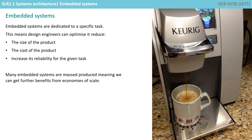Since embedded systems are dedicated to a specific task, design engineers can optimise them to reduce the size and cost of the product and increase the reliability and performance. Some embedded systems, such as this coffee machine here, are mass produced, further benefitting from economies of scale.